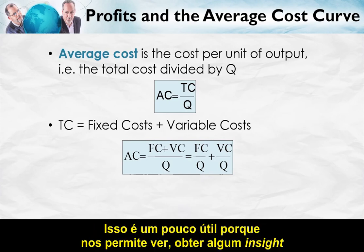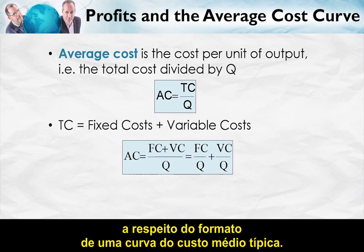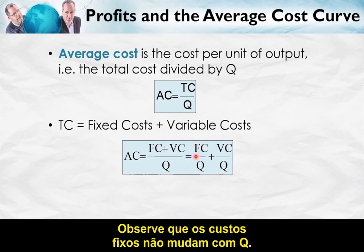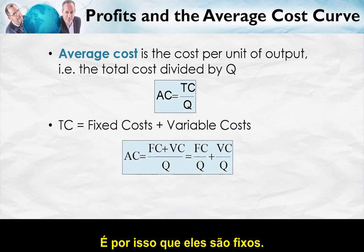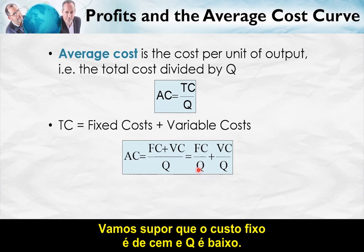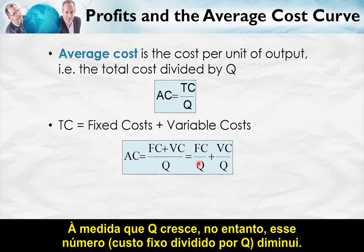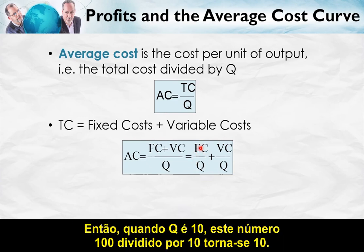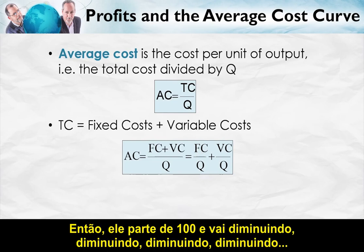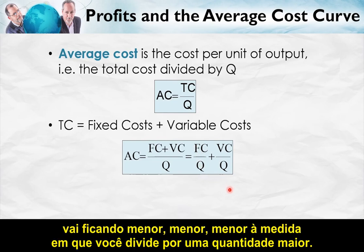This is useful because we can get some intuition for the shape of a typical average cost curve. Notice that fixed costs don't change with Q — that's why they're fixed. So when Q is small, suppose fixed cost is 100 and Q is small, then fixed cost divided by Q is going to be big, like 100 divided by 1. As Q gets larger, fixed cost divided by Q gets smaller — when Q is 10, it becomes 10. So it goes lower and lower as you divide by a bigger quantity.